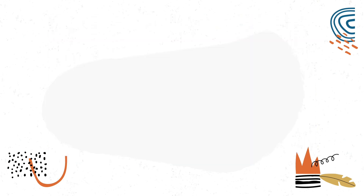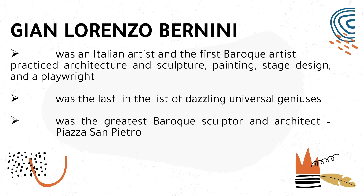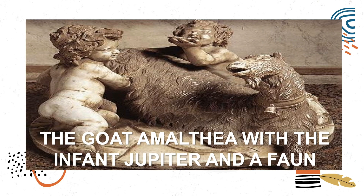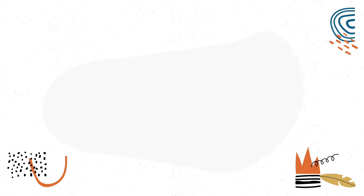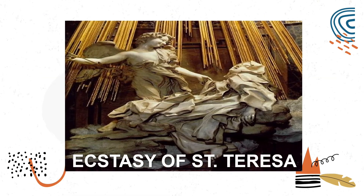The next artist is Gian Lorenzo Bernini, an Italian artist and the first Baroque artist who practiced architecture, sculpture, painting, stage design, and playwriting. He was the greatest Baroque sculptor and architect of Piazza San Pietro. His early works were the Goat Amalthea with the Infant Jupiter and a Faun, and the Blessed Soul. His greatest achievement is the Ecstasy of St. Teresa and the colonnade of the Piazza of St. Peter's in Rome.